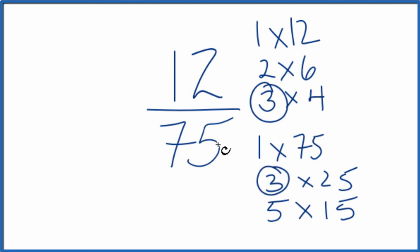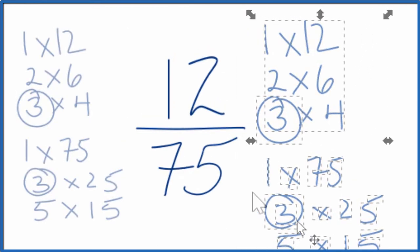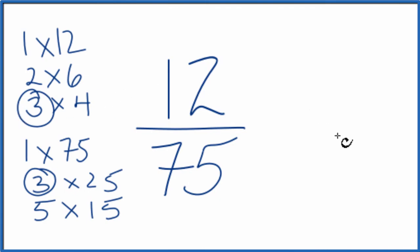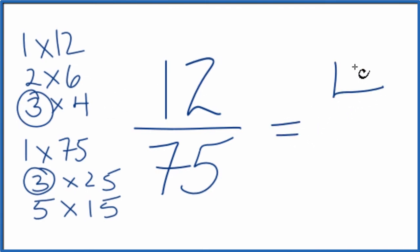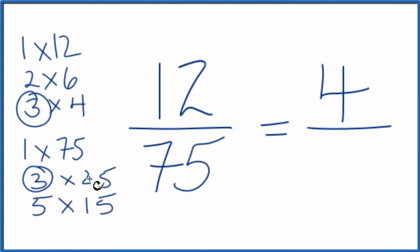We'll divide 12 by 3, 75 by 3, and we'll simplify 12 75ths. Let's move this over here. So 12 divided by 3, we know that's 4. And then 75 divided by 3 is 25. And we've simplified 12 75ths down to 4 25ths. We can't reduce this any further.